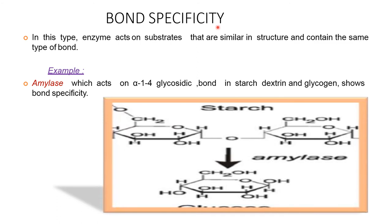Bond specificity. In this type, the enzyme acts on substrates that are similar in structure and contain the same type of bond. For example, amylase acts on the alpha-1,4-glycosidic bond in starch, dextrin, and glycogen, showing bond specificity.